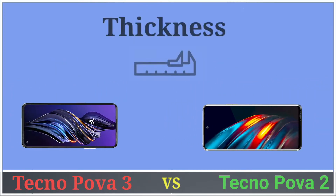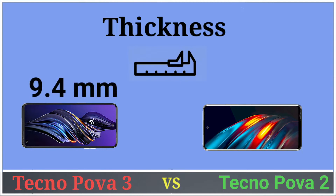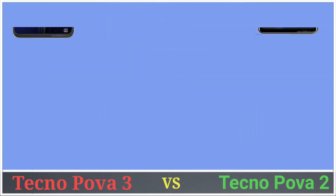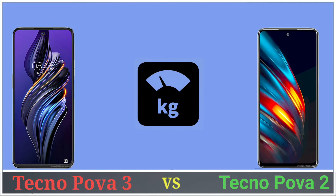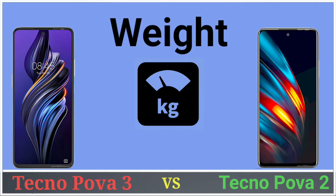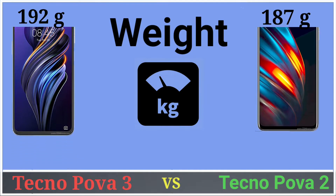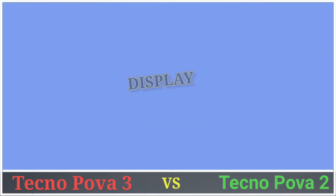Thickness: Pova 3 has 9.4 mm thickness and Tecno Pova 2 has 9.6 mm thickness. Weight: Tecno Pova 3 has 192 grams and Tecno Pova 2 has 187 grams.